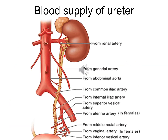Blood supply of ureter. The abdominal part derives its arterial supply from the renal artery, testicular or ovarian artery, and a few direct branches from the aorta. The pelvic part is supplied by the internal iliac artery, superior and inferior vesical artery, middle rectal artery, and uterine artery. The venous blood from the ureter is drained into the veins corresponding to the arteries.